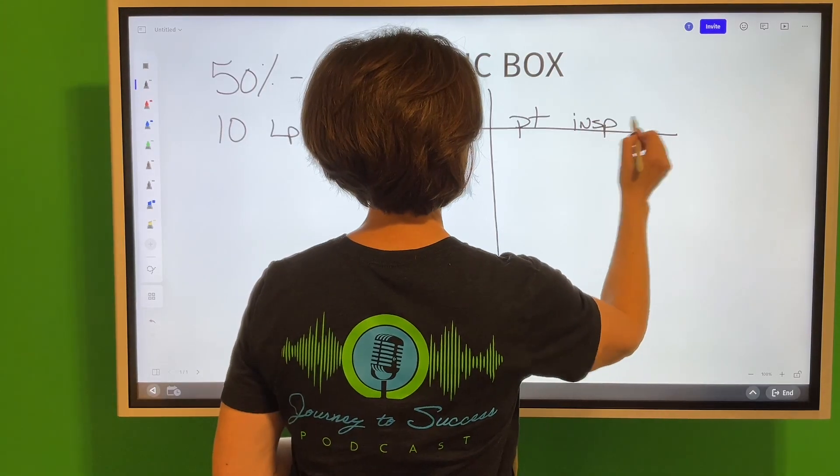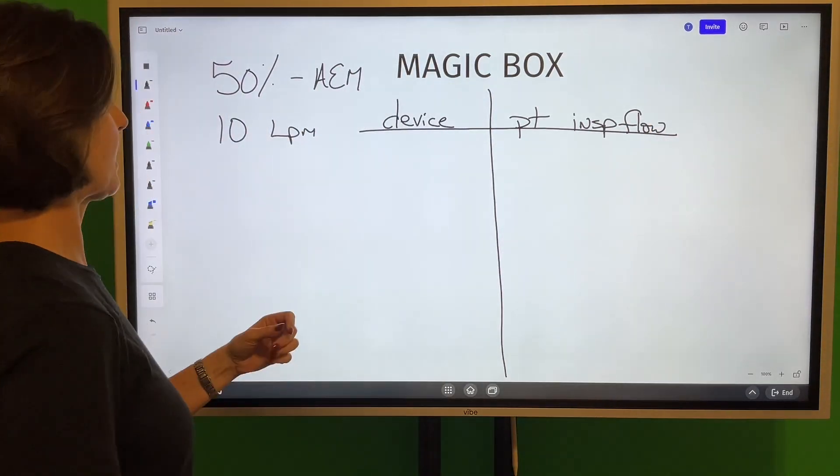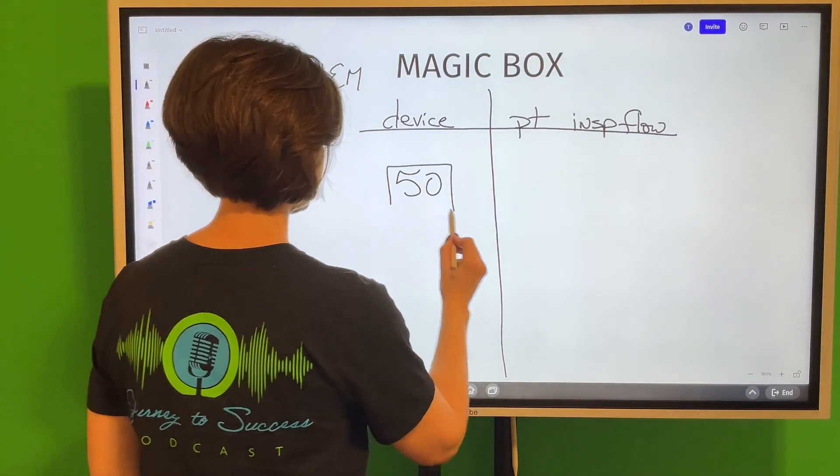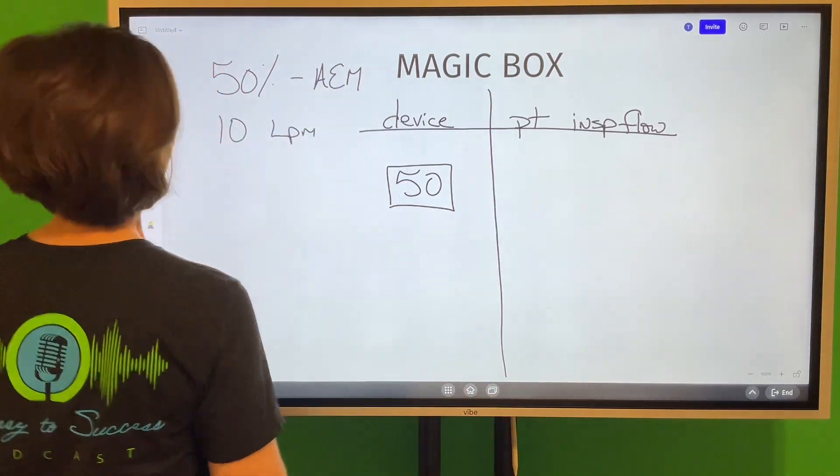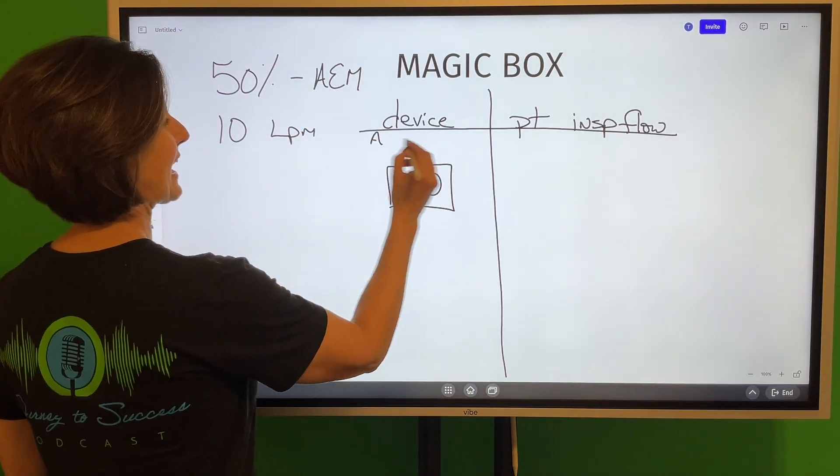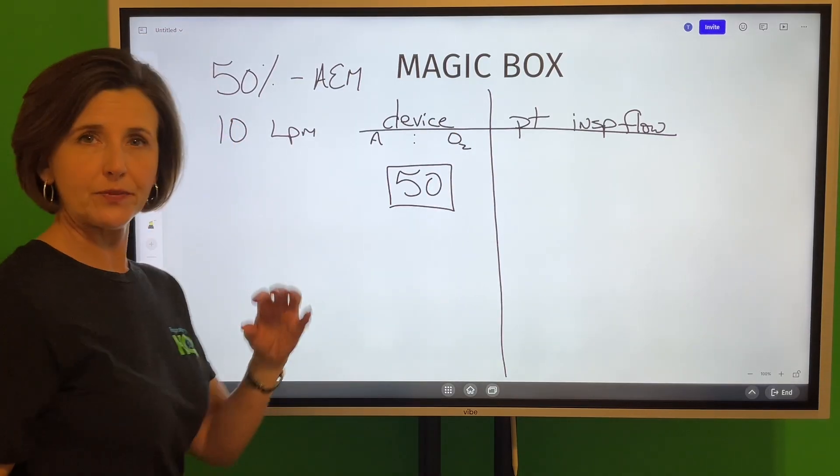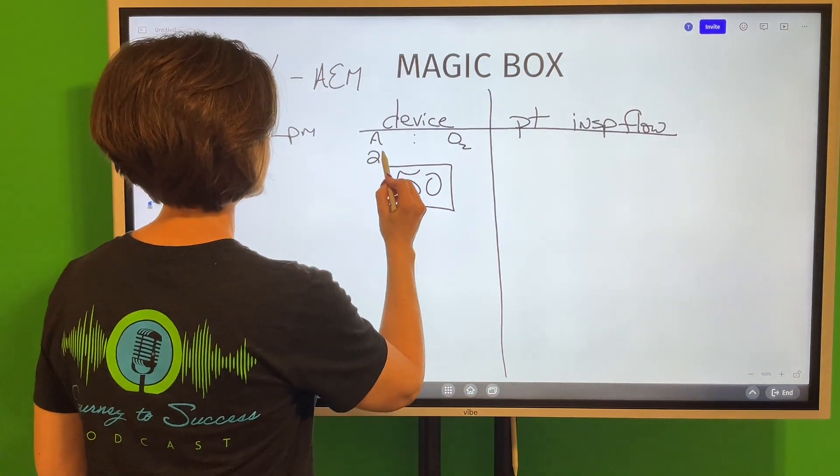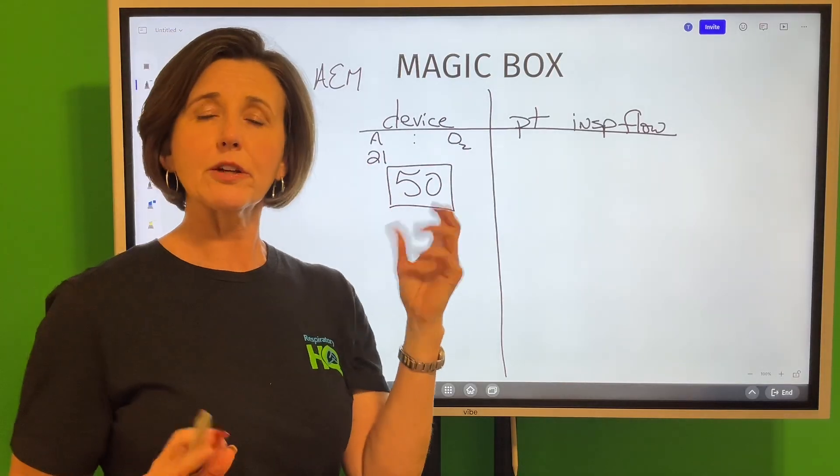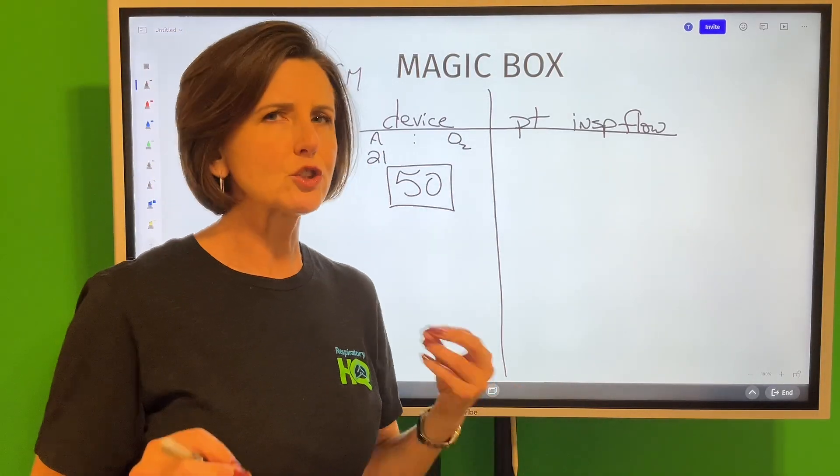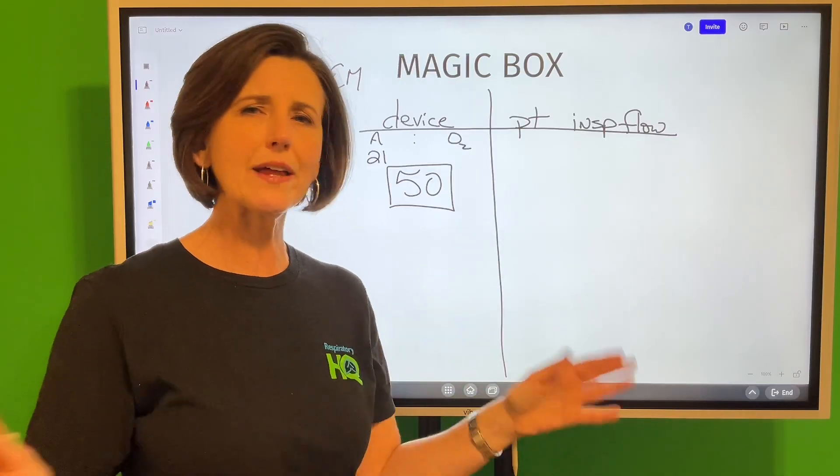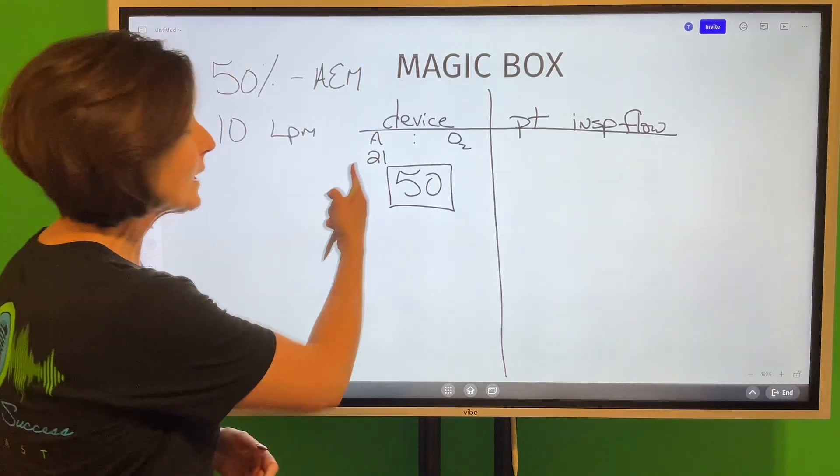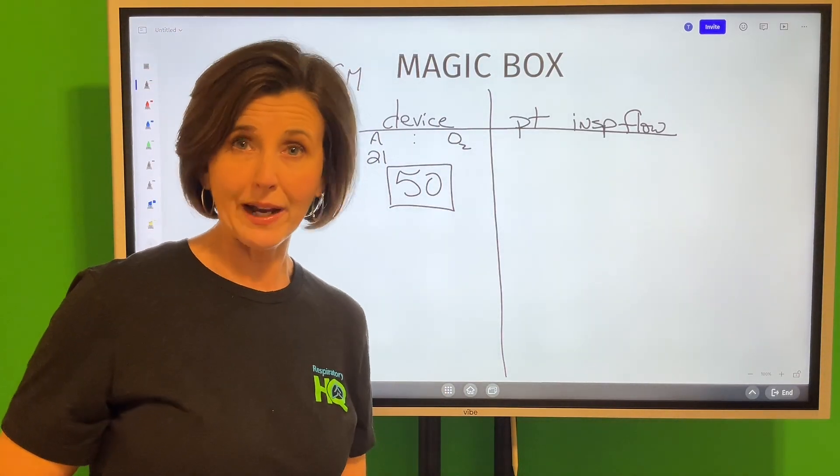All right, so let's start with the magic box. To do the magic box you put the FiO2 in the box, so there's 50%. What we're wanting to do with this box is come up with an air to oxygen ratio. Here's what you do with this: think air. What is the FiO2 of room air? Well it is 21%. Now a lot of people will tell you you can use 20 here to make the math easy. You can, but there's certain rules when you can use 20 and when you can't. So rather than memorizing a lot of different rules and getting them kind of mixed up, you've got a calculator, always use 21 here and you will always be right without memorizing any rules.